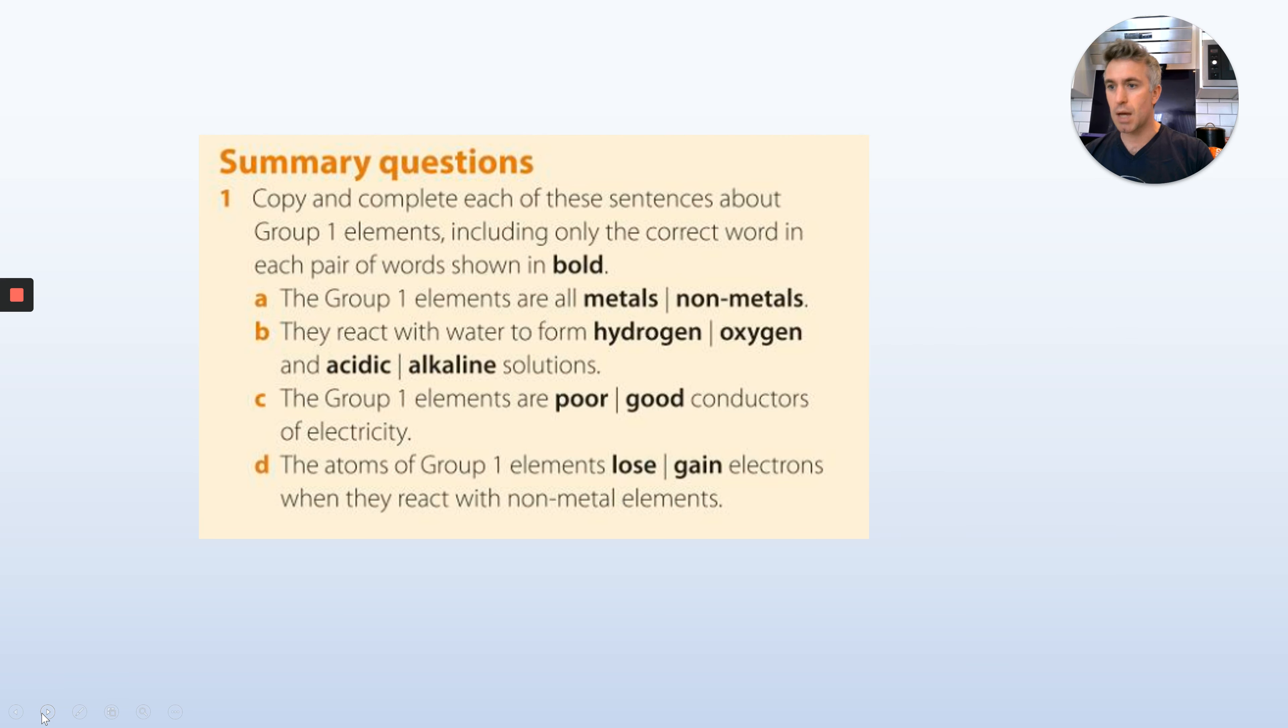First one, nice and simple. It says copy and complete. I don't want you to do that. I just want you to write one A, B, C, D and then the correct word. Copy and complete each of these sentences about Group 1 elements, including only the correct word in each pair shown in bold. Group 1 elements are all metal or non-metal, so you would just write 1A and either metal or non-metal. Don't write both, be brave, have a go. They react with water to form hydrogen or oxygen and an acidic or alkaline solution. So just choose one of those two pairs. The atoms in Group 1 elements lose electrons or gain electrons when they react with non-metal elements. Just write down the correct answer.